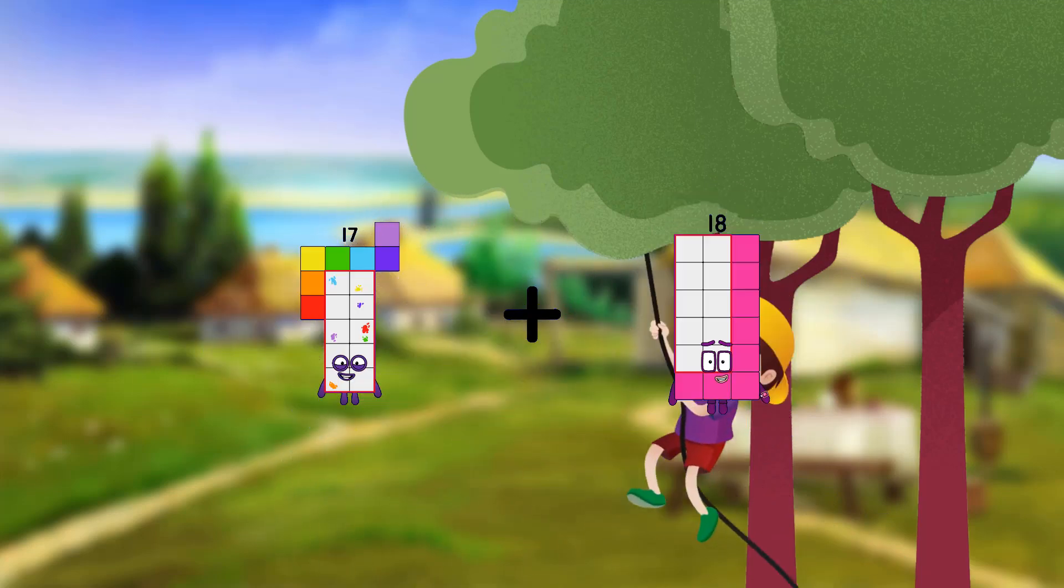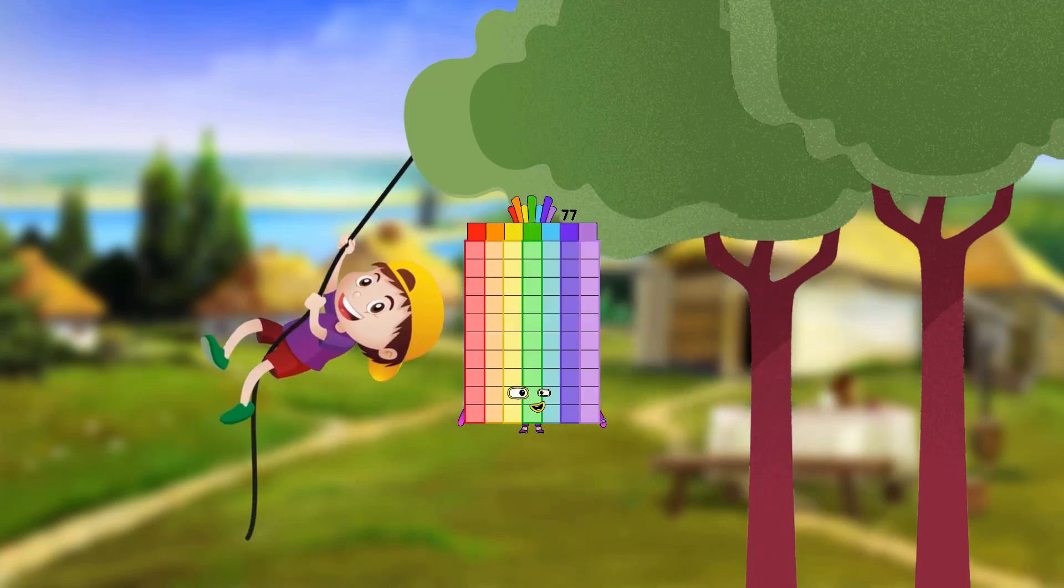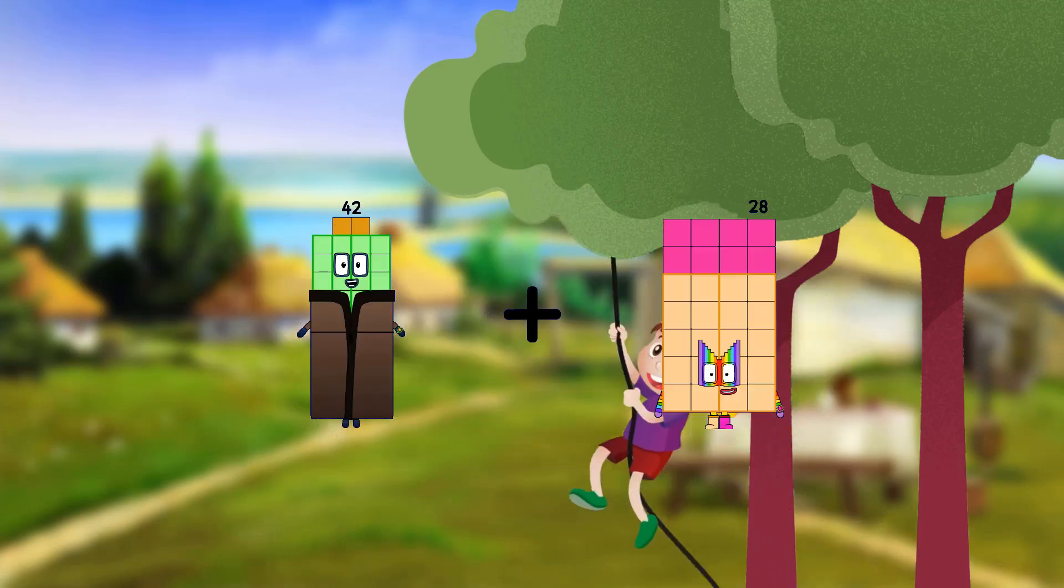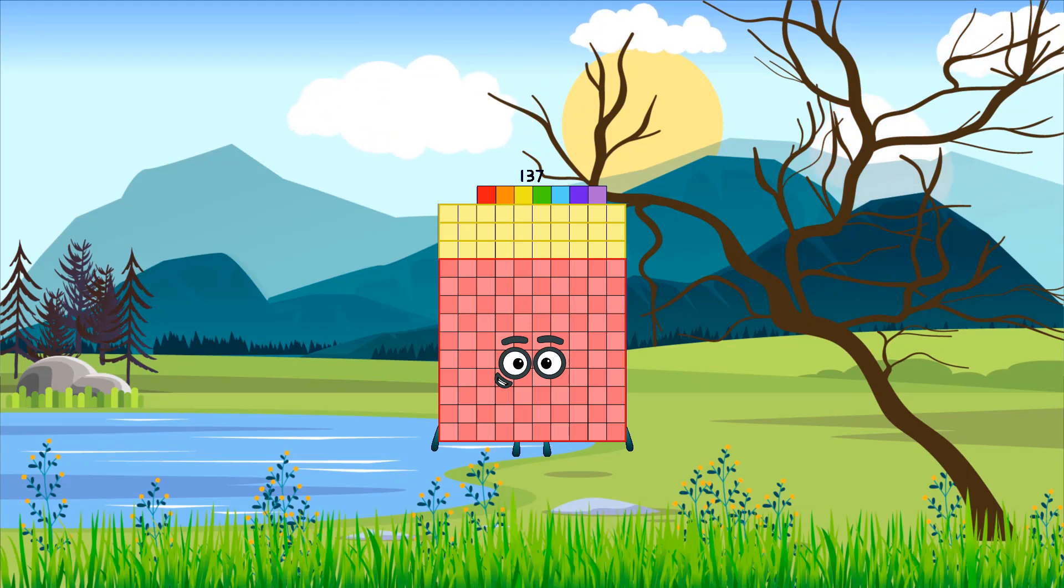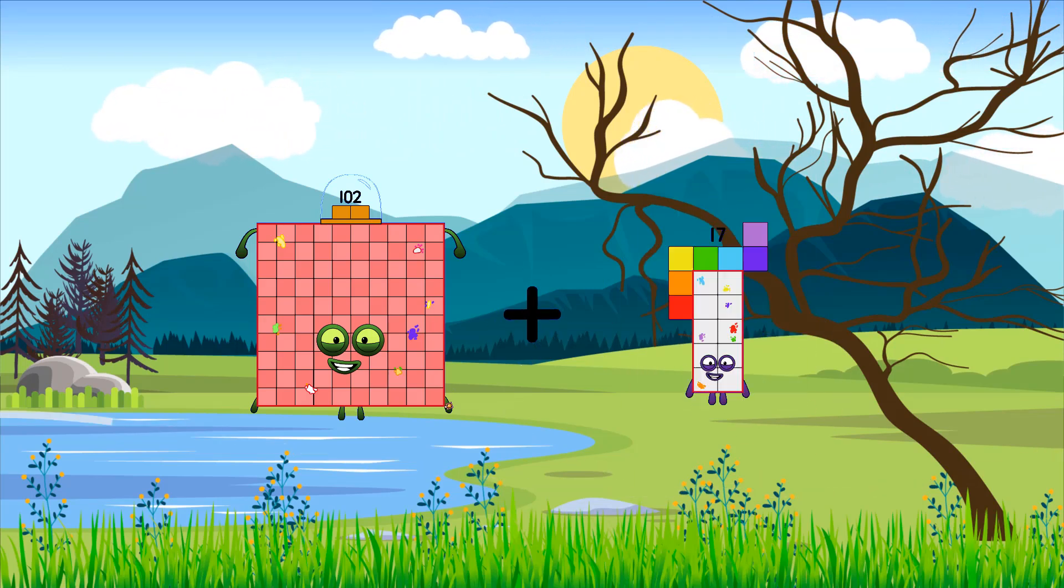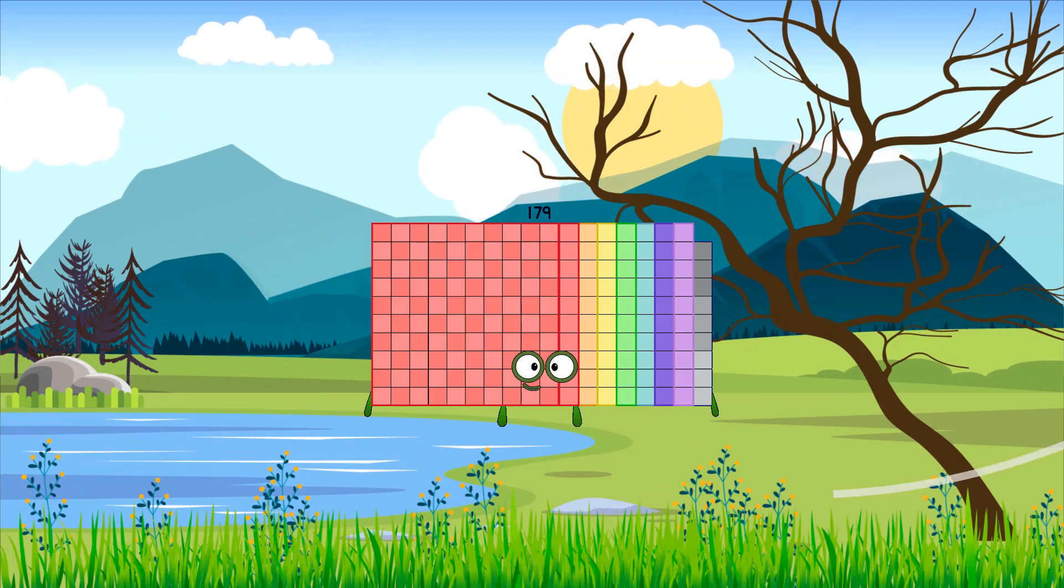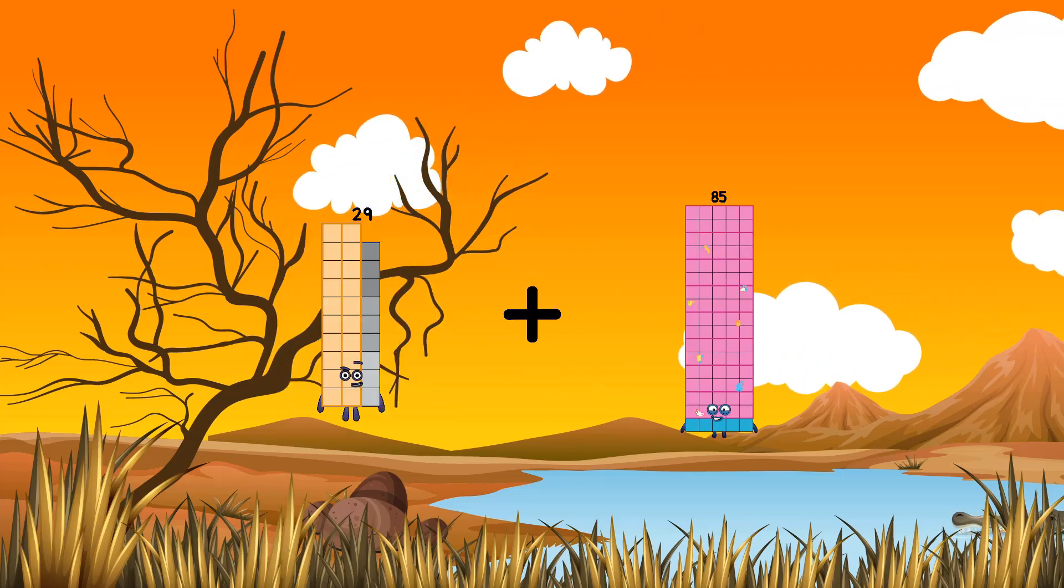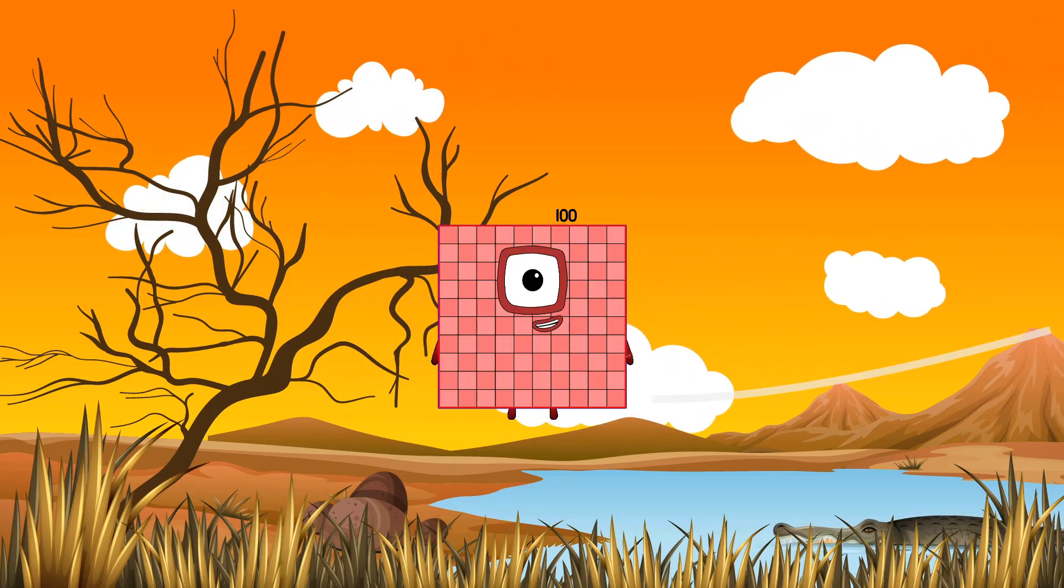17 plus 16 equals 77. 42 plus 95 equals 137. 102 plus 77 equals 179. 29 plus 71 equals 100.